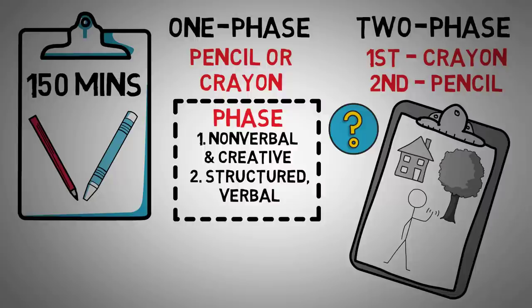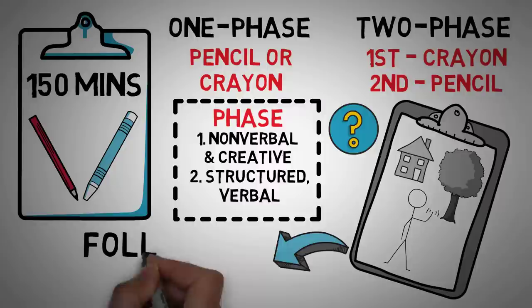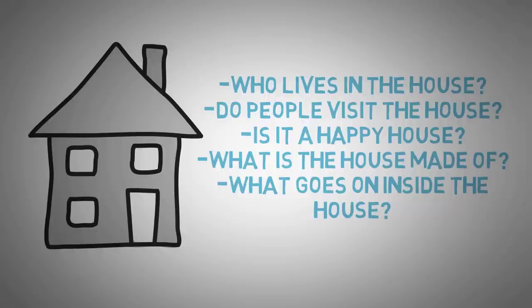Buck proposed a list of 60 questions. However, trained test givers are free to create their own variations and ask different questions. Here are some examples of the questions that might be asked. For the House: who lives in the house? Do people visit the house? Is it a happy house? What is the house made of? And what goes on inside of the house?